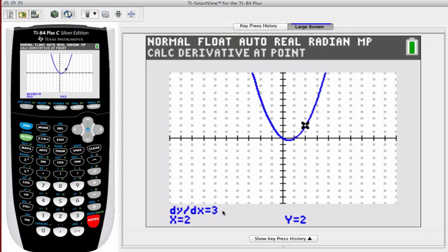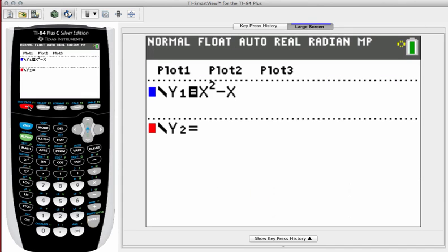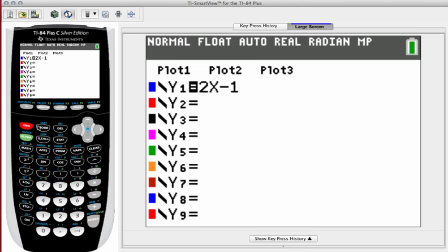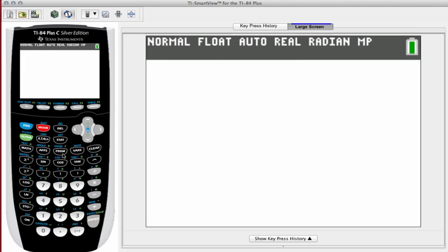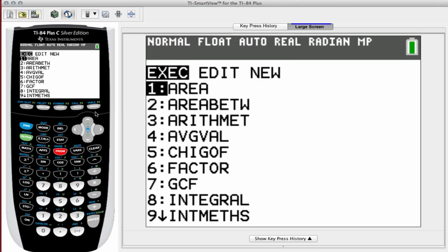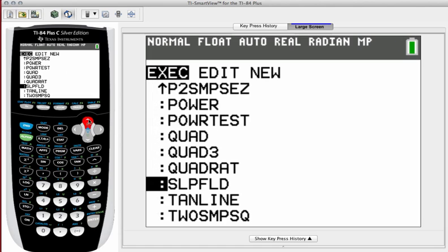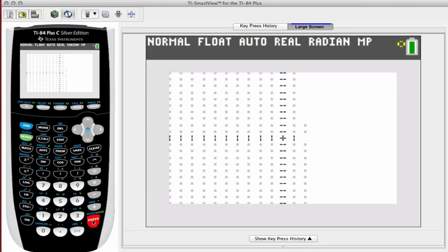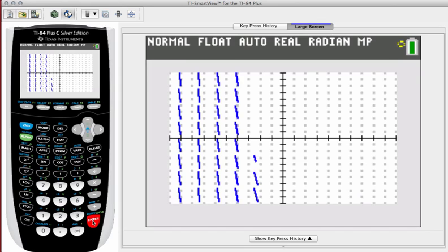You have a program that is in your graphing calculator called slope fields that will do that for you. Let's go back under y equals and I'm going to erase the given curve. And what I'm going to type in is what I know the derivative to be, 2x minus 1. If you then go back to your quit screen and pull up the program slope field, remember all your programs are alphabetized in your list. Hit enter on it, and enter again.